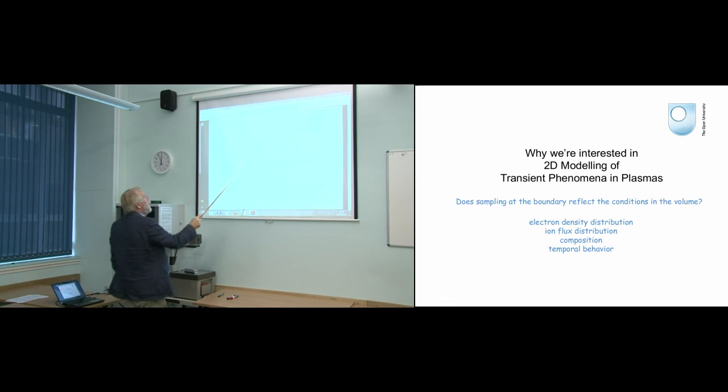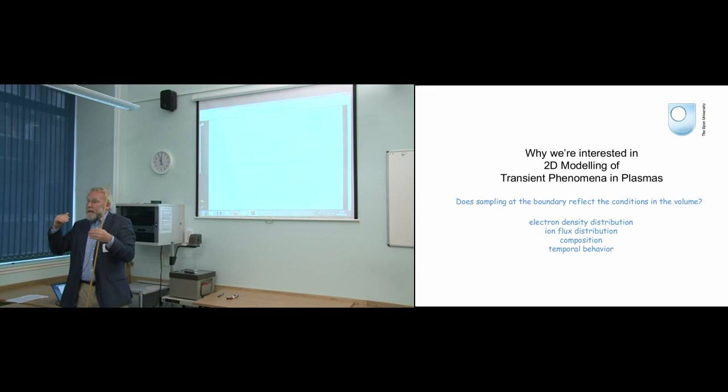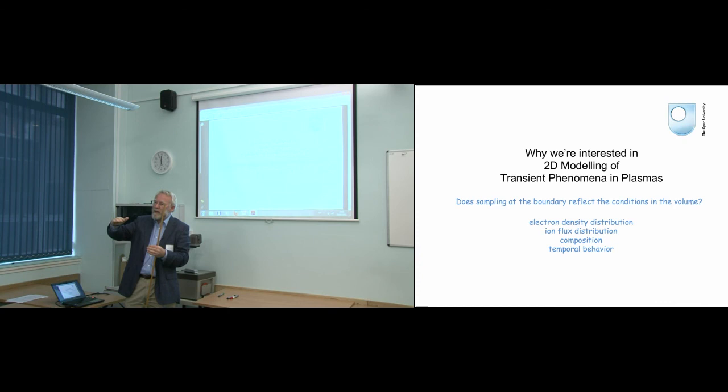So, time to draw to a close and say why we're interested in 2D modeling of transient phenomena in plasmas is because I want to answer the question, does sampling at the boundary reflect conditions in the volume? It's very good, I mean commercially as a means of working with the semiconductor industry, who will put nothing in the plasma that isn't a wafer, then you've got to work in the surfaces. And you can try getting photons out, they come for free, but getting anything in there is really difficult. So I'm trying to get the question, can I sit at the boundary and very simply, terribly simply, electrically, find out what's going on in the plasma volume? Things about the electron density and its distribution, is it uniform? Things about the distribution of ion flux, things about the composition.